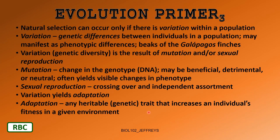If you're a bullfrog and your call is loud and deep and you're better able to attract mates, natural selection will choose you over the bullfrog with the little weak call, because you're better able to attract mates and therefore better able to reproduce — you're more fit. All of these phenotypic advantages come through genetic adaptations.